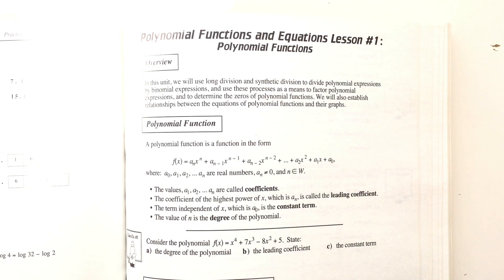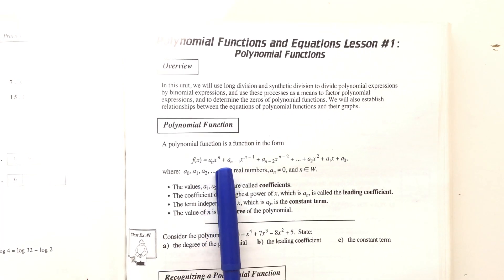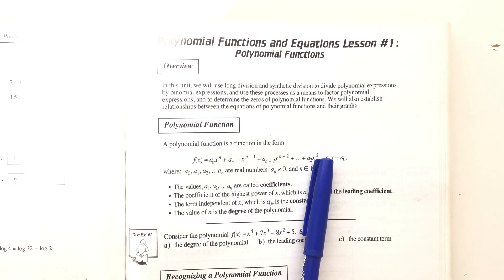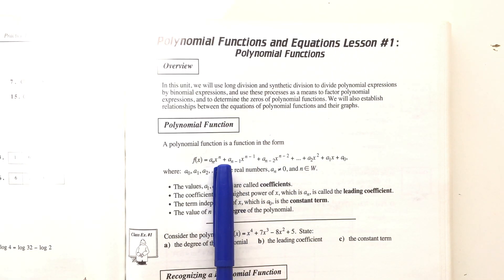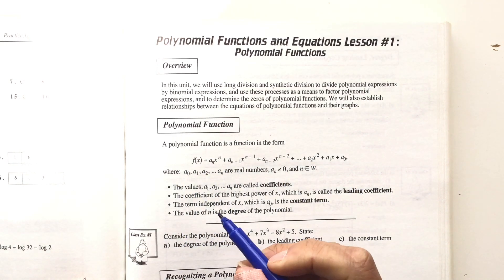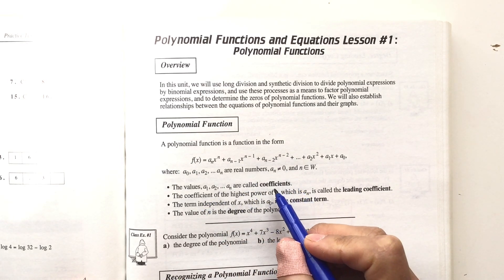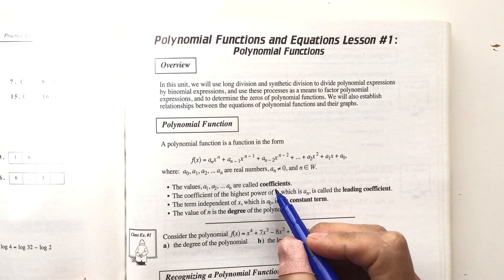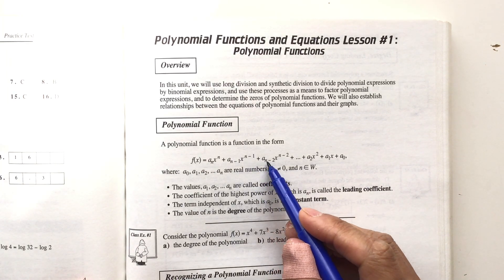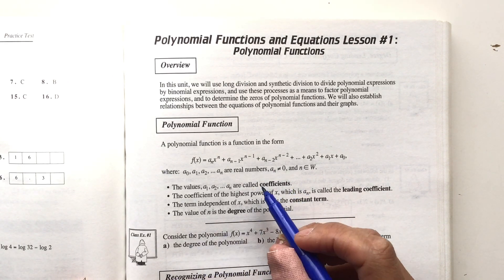When we're looking at a polynomial function, a polynomial function is in a form shown here. When we look at actual examples of polynomial functions it'll probably make a lot more sense. There are four different things included in a polynomial function. First we have coefficients — look to class example number one for reference.